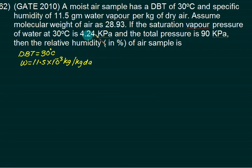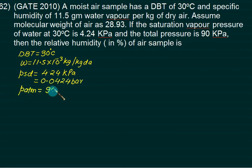PSD is 4.24 kilopascals. Divided by 100 will become bar: 0.0424. And the total pressure is atmospheric pressure, 90 kilopascals, which is 0.9 bar. You want to calculate phi.